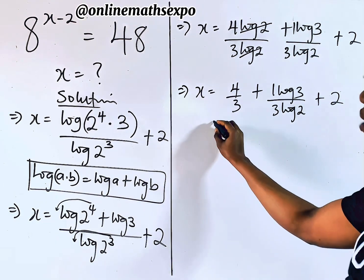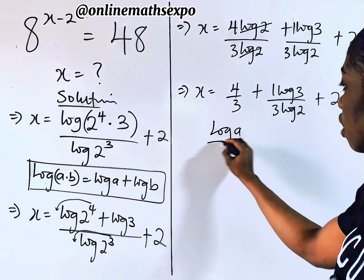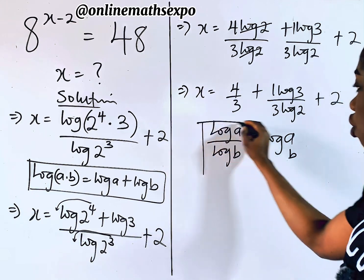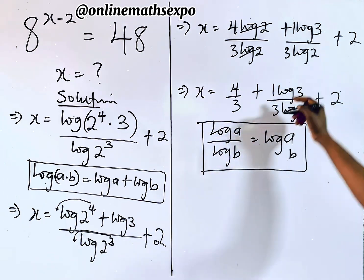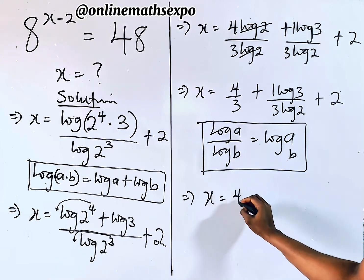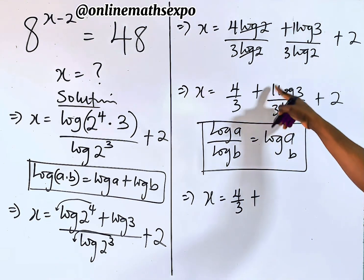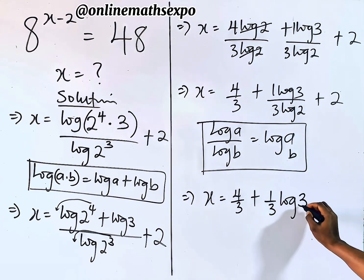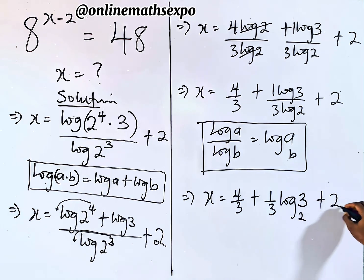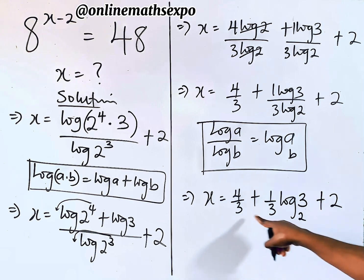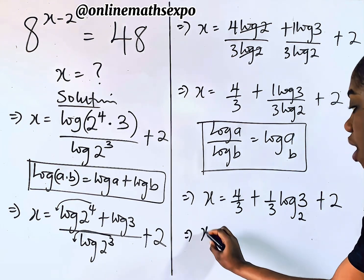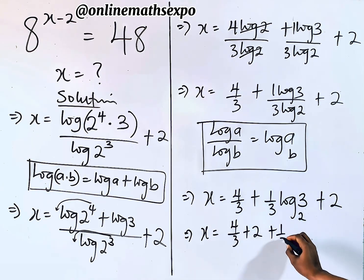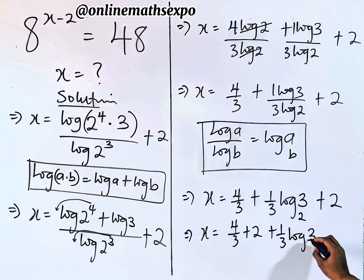So we have 4/3 plus log(3) divided by 3·log(2), plus 2. Remember, for every log(A) divided by log(B), it equals log base B of A — that's the change of base rule. Applying this, log(3) divided by 3·log(2) becomes (1/3)·log base 2 of 3. The two constants 4/3 and 2 can be added together.